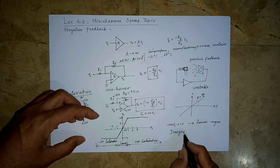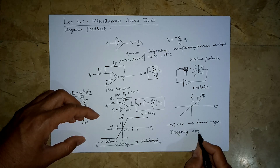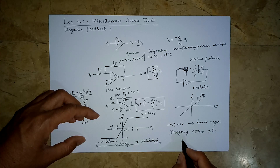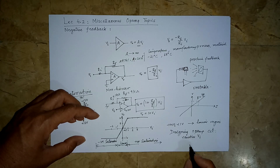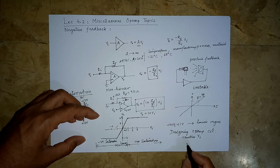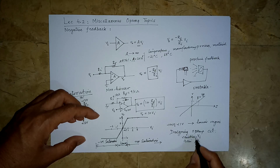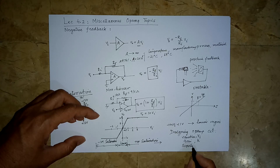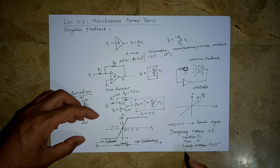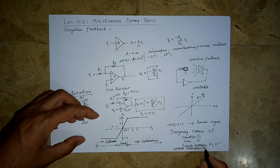When designing opamp circuits for practical applications, we look at the variation in the input voltage, the values of RF and RI (the gain k), and then choose the supply voltages V+ and V− appropriately such that the opamp remains in the linear region.